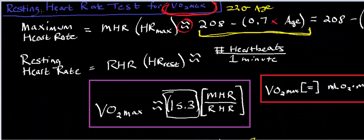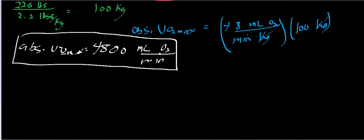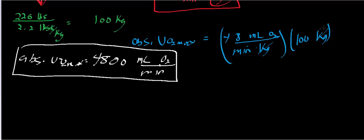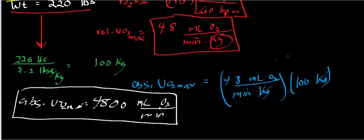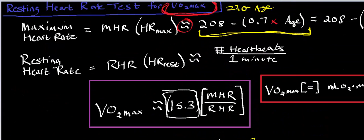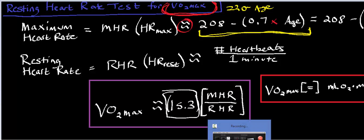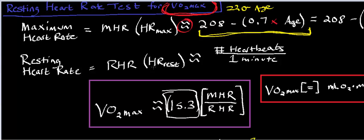Remember that because the maximum heart rate calculation was an estimation, the resulting absolute and relative VO2 max values are also estimations. There are ways to more accurately measure maximum heart rate, but those require performing a cardiorespiratory test to maximum exhaustion, which most people don't want to do — so that's why we use the estimation. Hopefully this video made sense for how to calculate the expected VO2 max using the resting heart rate test. In other videos we'll look at other methods to calculate VO2 max. Make sure to like the video, subscribe to the channel for future videos. Thanks very much, hope you enjoyed the video, have a nice day.